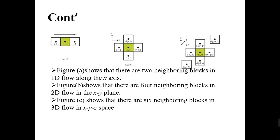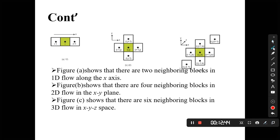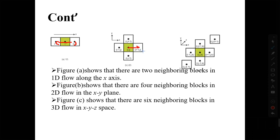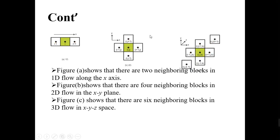We have three different dimensions: one dimension, two dimensions (x and y), and three dimensions (x, y, and z). In one dimension we have two neighboring blocks — fluid flows forward or backward. In two dimensions we have four neighboring blocks, meaning more equations. In three dimensions we have six neighboring blocks — the fluid can flow in all six directions across x, y, and z planes.